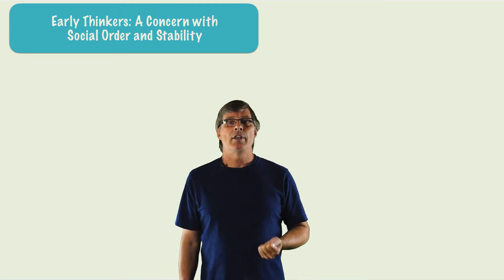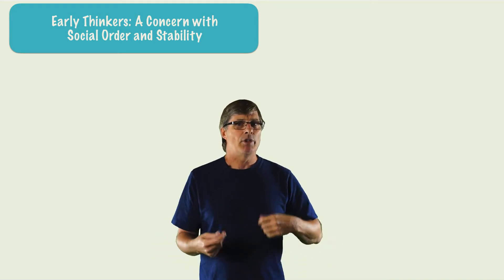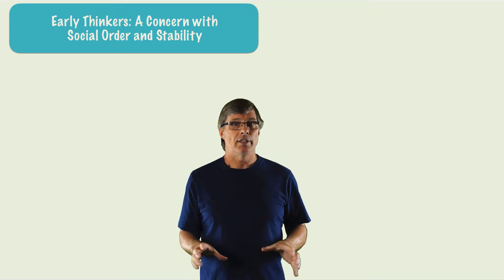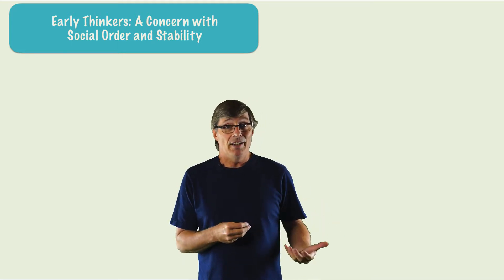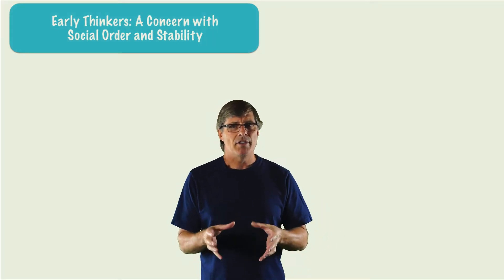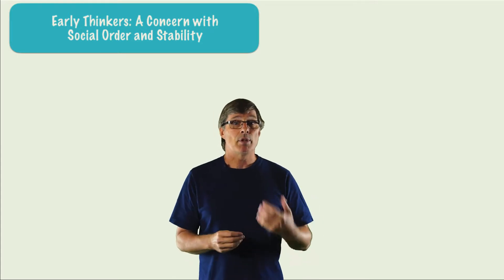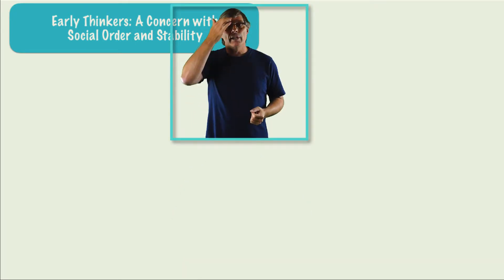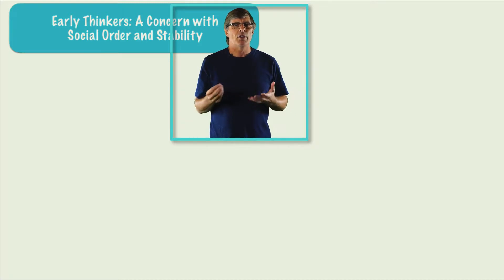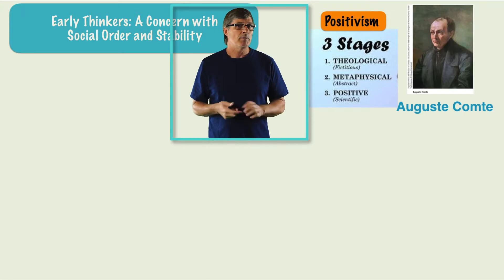Looking at some of the early thinkers, a concern with social order and stability was paramount in early sociological thought. Natural scientists had been using reason and rational thinking to discover the laws of physics and the movement of the planets. Social thinkers of the day began to believe that by applying the methods developed by the natural sciences, they might discover the laws of human behavior and apply these laws to solve social problems. Some of the early thinkers from the early to middle 19th century include Auguste Comte, Harriet Martineau, Herbert Spencer, and Emile Durkheim, who were all interested in analyzing social order and stability.